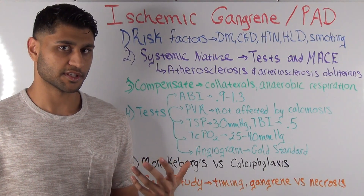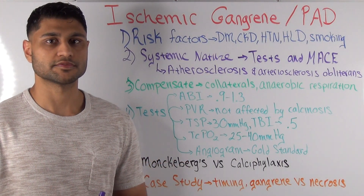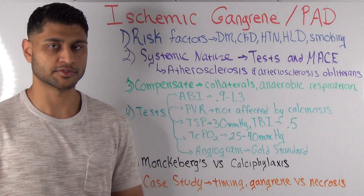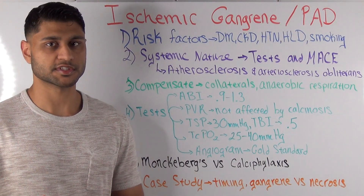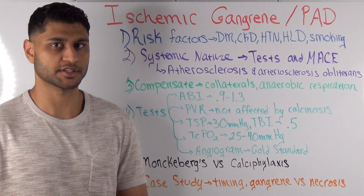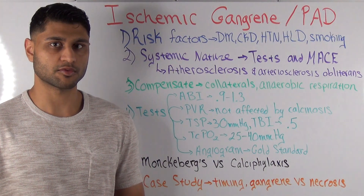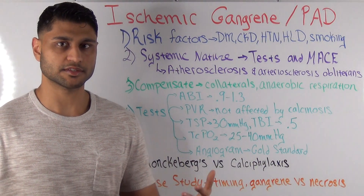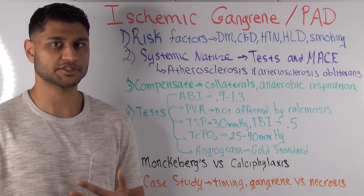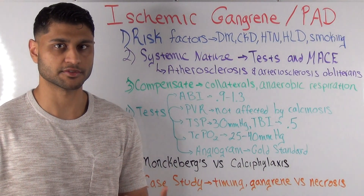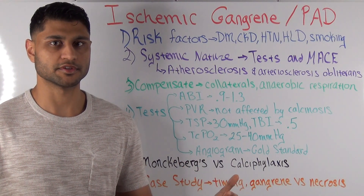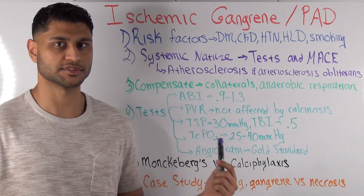One way you can use this to your advantage in interviews is: if they ask what tests you want to order or what past medical history you want to know, most students will say ABI, PVRs, and intermittent claudication in the lower extremity. That's true, but if you think outside the box, you can also ask whether the patient has ever had a TIA, or chest pain with exertion or angina pectoris. Understanding the systemic and global nature of this disease process is what can make you stand out during the interview.